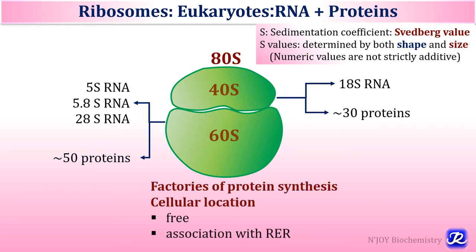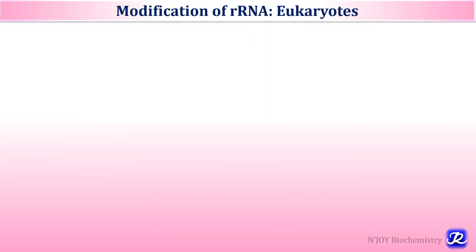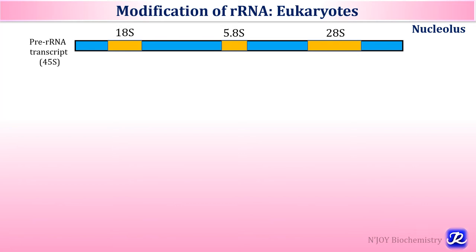Ribosomes are the factories of protein synthesis and can be present in the cytosol as free ribosomes or in association with the rough endoplasmic reticulum. Transcription by RNA polymerase 1 produces a single precursor that encodes three RNA components of the ribosome: 18S, 5.8S and 28S.